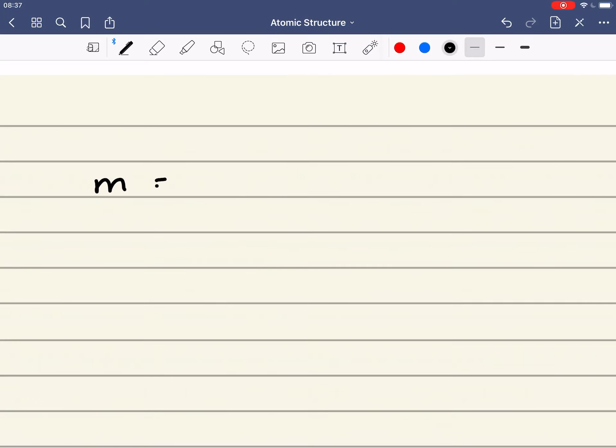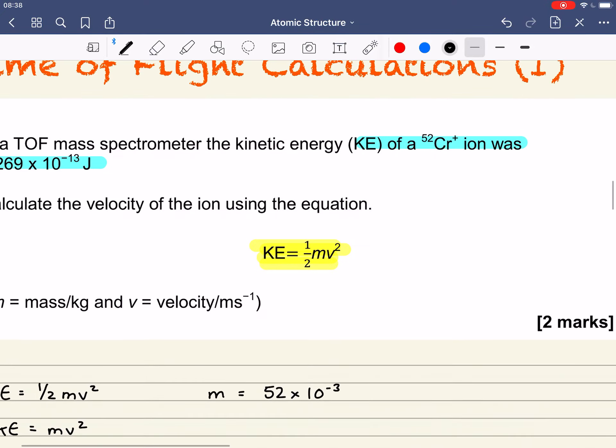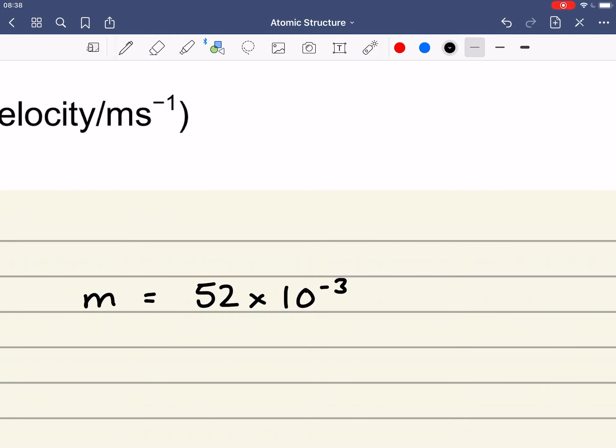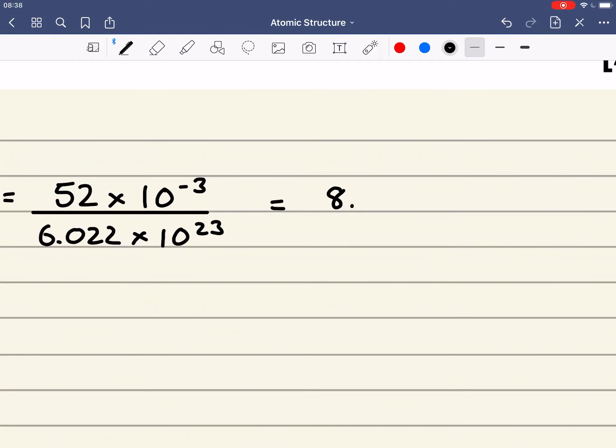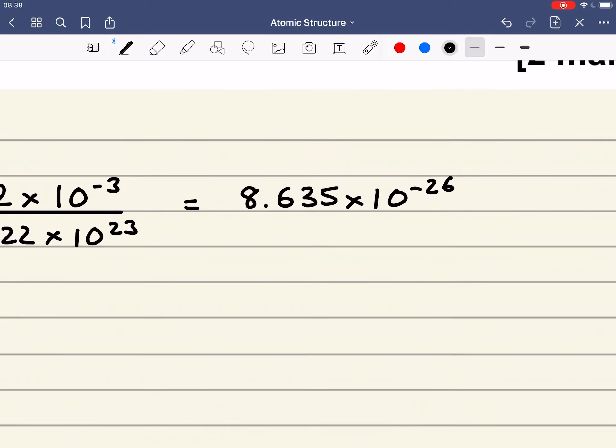Now the mass it wants is the mass of one of these chromium 52 plus ions in kilograms. So what I need to do then is 52 times 10 to the minus 3, because this 52 here is the mass of one mole of chromium ions in grams. So we need to first convert it into kilograms by times it by 10 to the minus 3, or divide it by 1000. And then to get the mass of one ion rather than a mole of them, we divide it by Avogadro's constant which is 6.022 times 10 to the 23.